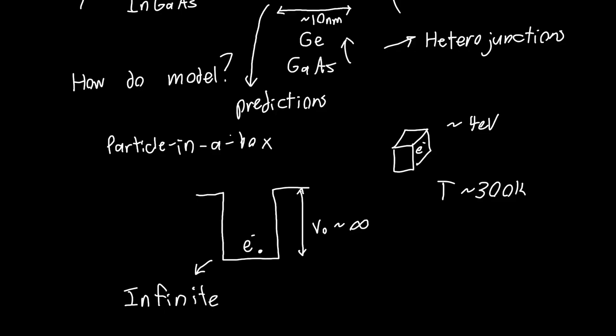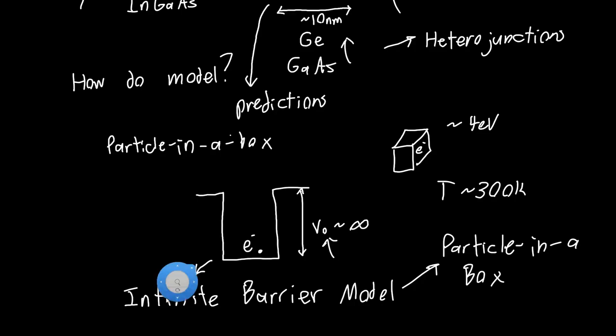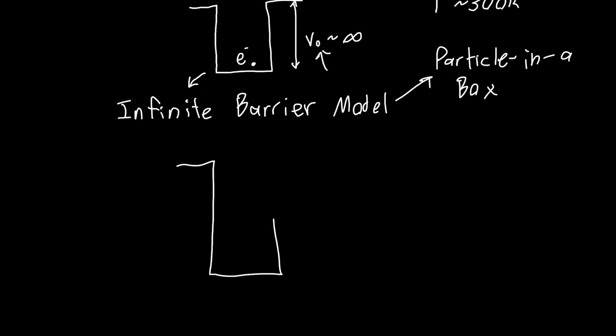A good starting point for understanding the quantum well is the infinite barrier model. If this V naught is much larger than the energy that electrons are likely to have, that kinetic energy, then this is a good model. This is also known as the particle in a box model. This model makes predictions about the energy levels that the electrons are allowed to have. So if this for example is energy and implicitly this height has to be infinity but I'm just drawing these barriers here to make this clear, these electrons can have certain energy levels. There are certain discrete energy levels, so this might be E1, energy level 2.